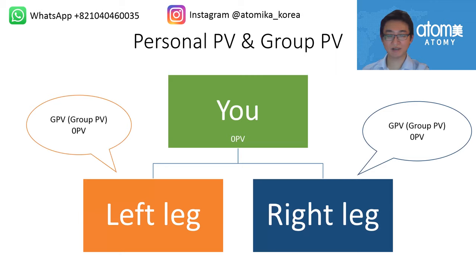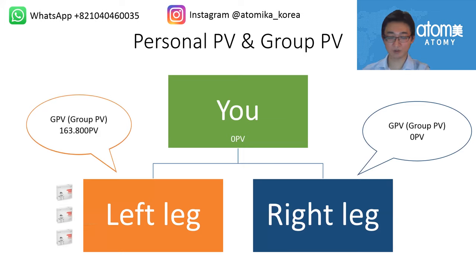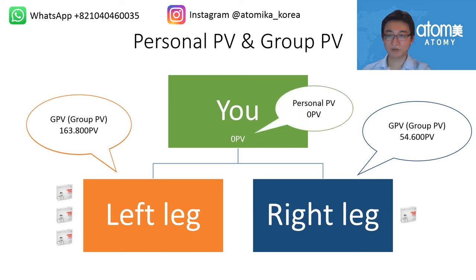There are two types of PV: personal PV and group PV. Personal PV can only accumulate and can never be nullified — every purchase you make under your account adds to your personal PV. Every purchase your partners make adds to your group PV. For example, on your left leg, if someone bought HemoHIM multiple times, you might have 163,800 group PV there.